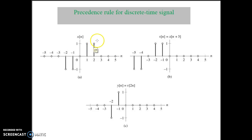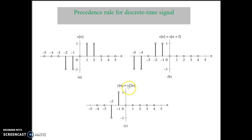For the precedence rule applied to discrete time signals: x(n) represents the discrete time original signal. First, perform time shifting — shift the original signal towards the left hand side by three sample positions, because v(n) equal to x(n plus 3) represents advancing of the original signal by three sample positions. Then scale the signal by a factor of 2, where values of n get replaced by values of 2n.